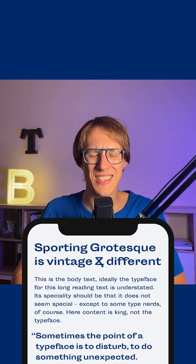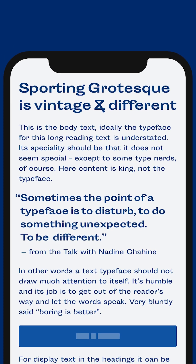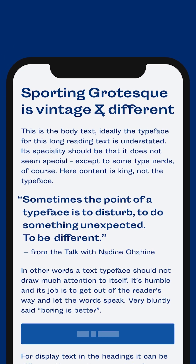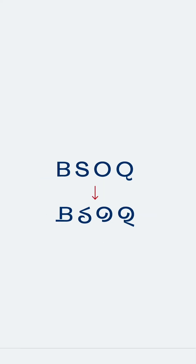Sporting Grotesque is a crazy interesting display typeface for interesting titles or headings, and it has some stylistic alternates. But how can you access them in CSS? Let's take a look at that.